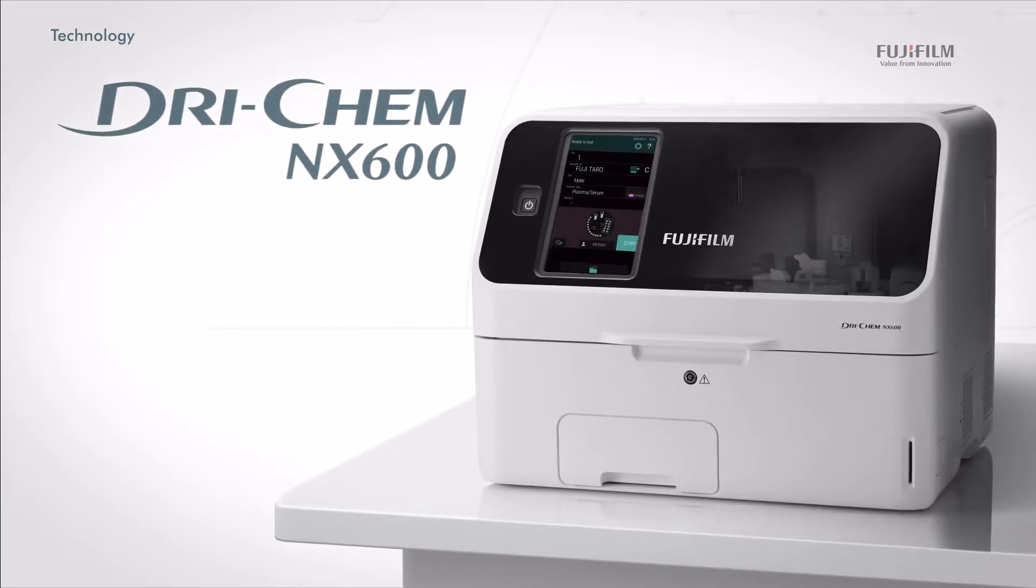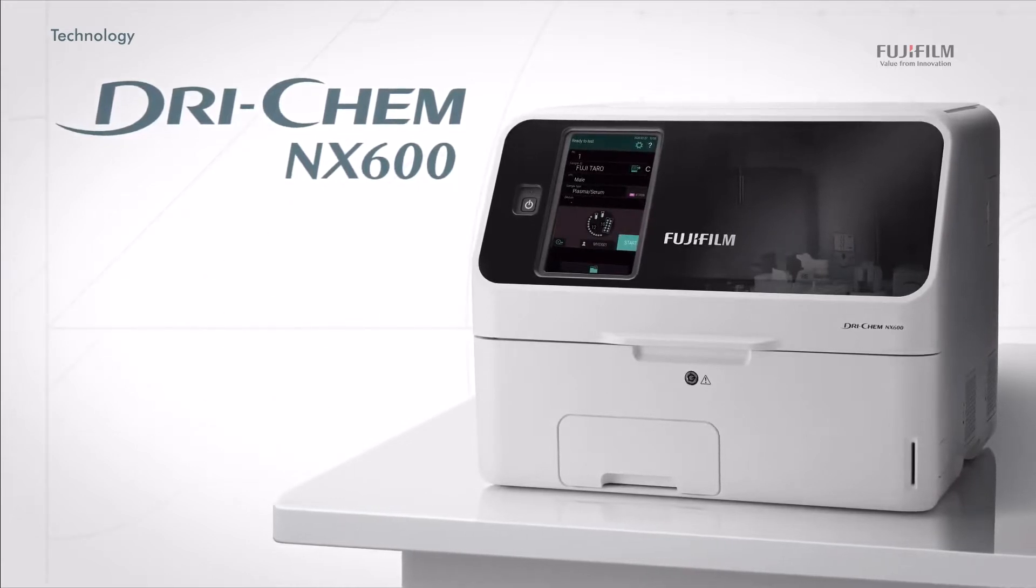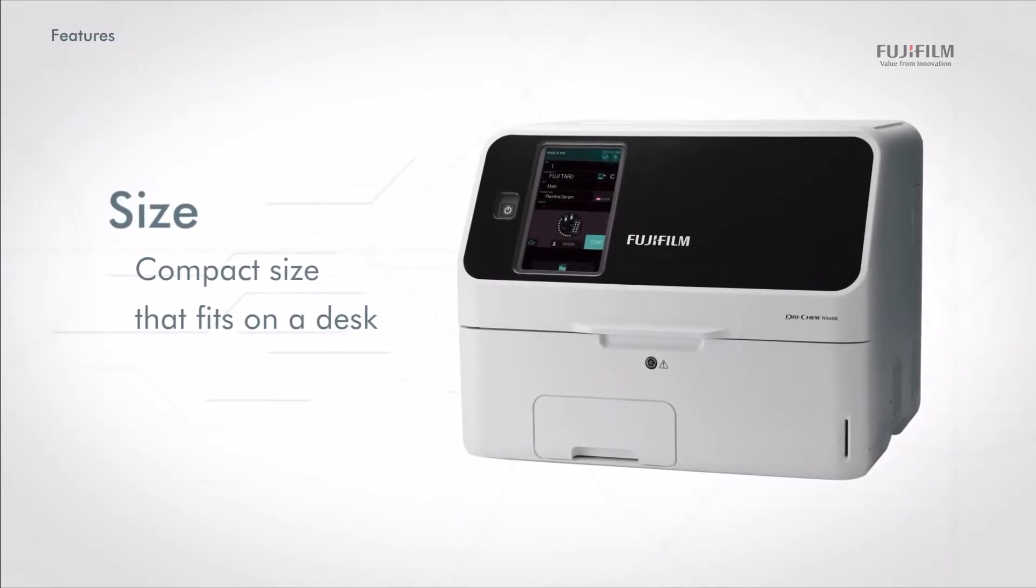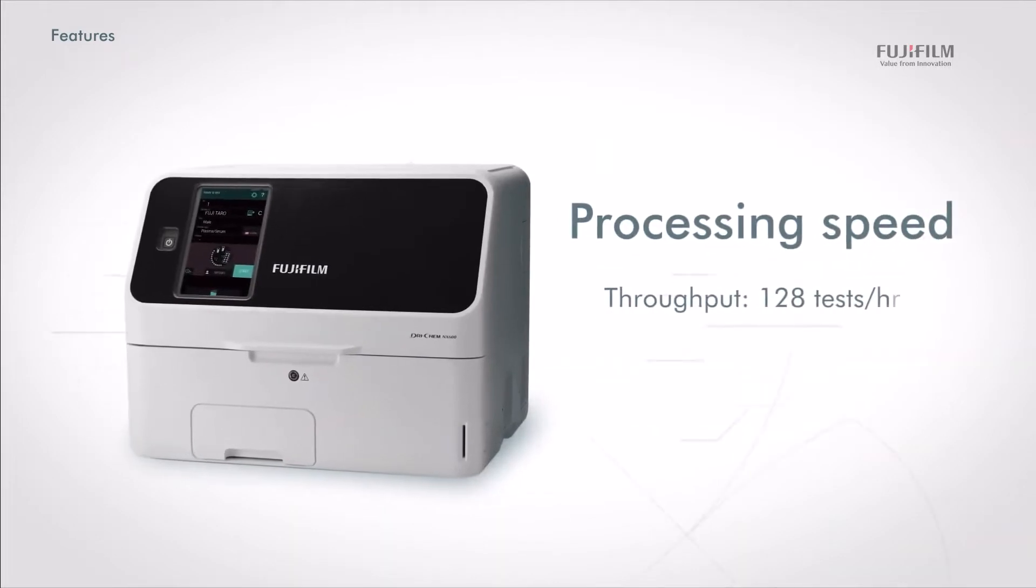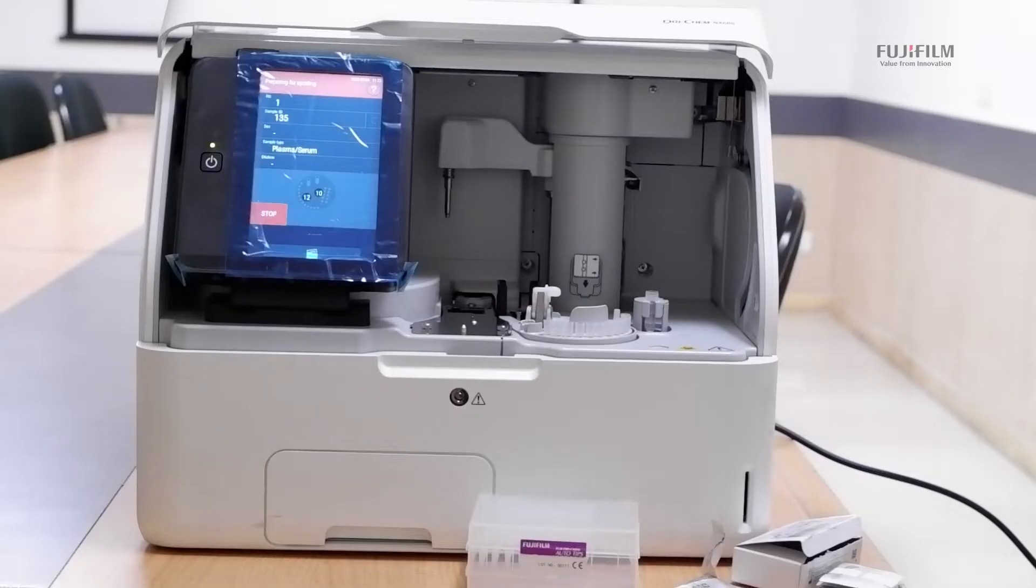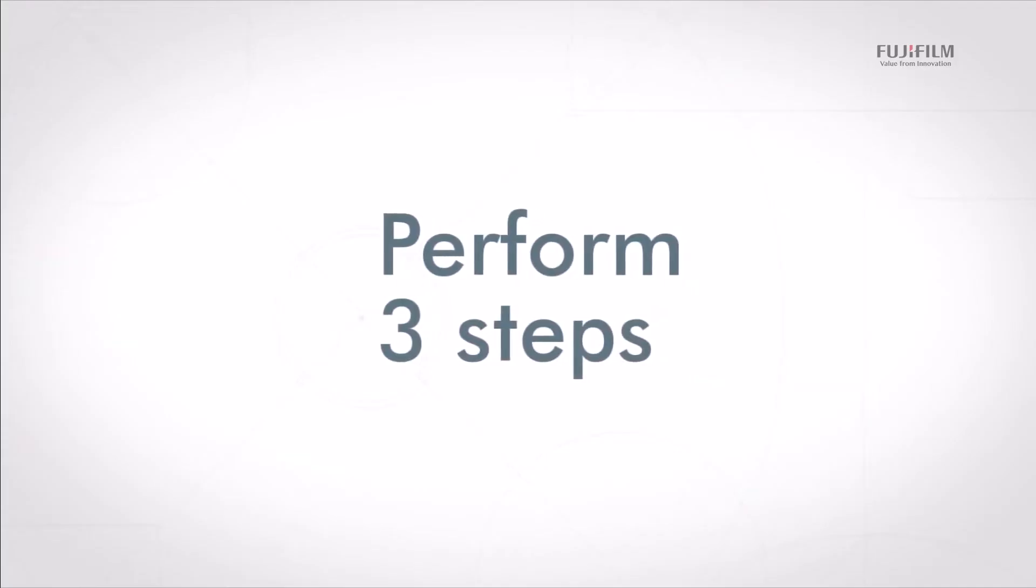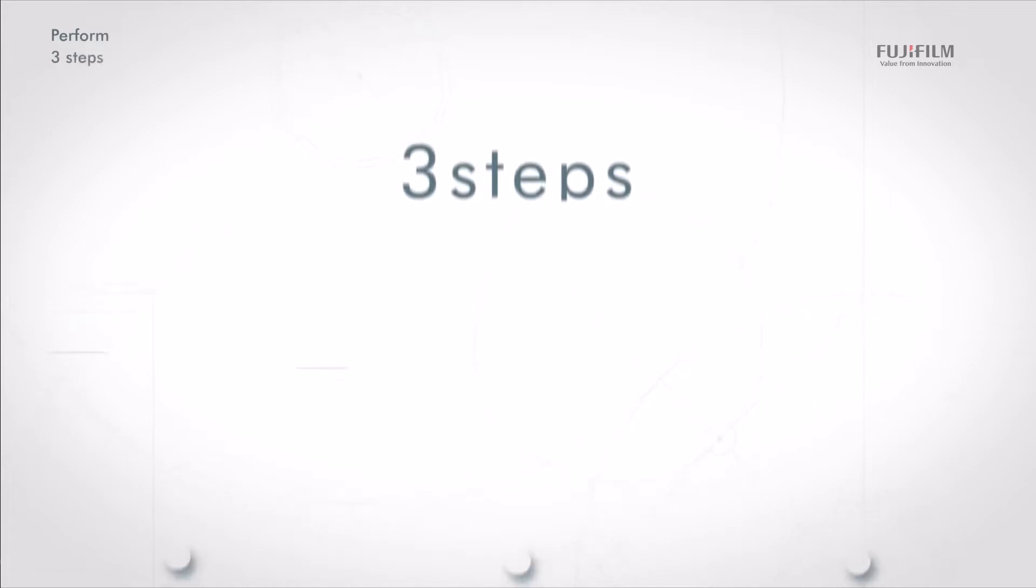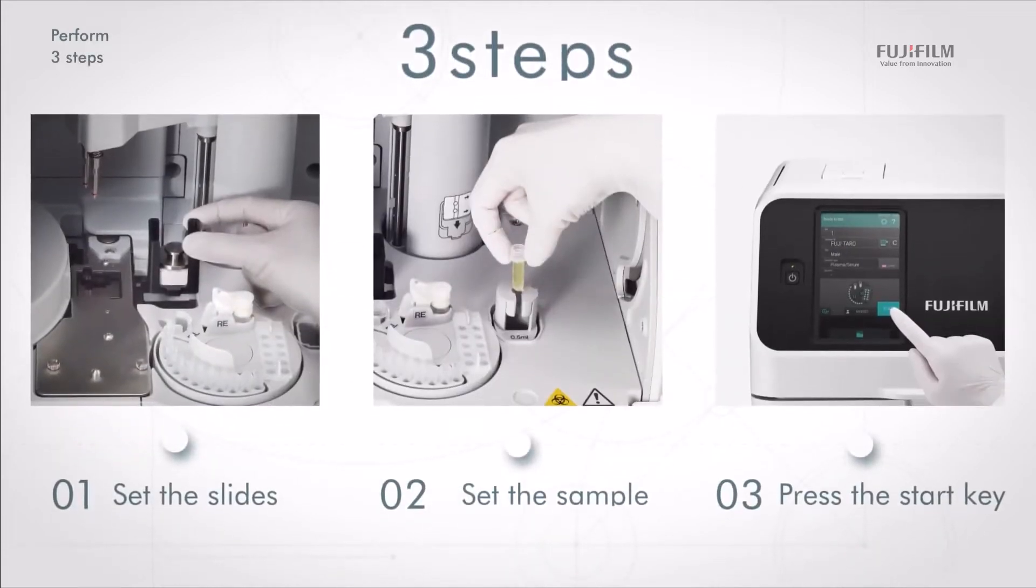FUJI NX600 is a dry chemistry analyzer which is a benchtop analyzer with a throughput of 128 tests per hour. It uses a fine chemical technology which is a patented technology by FUJI Film Japan. It uses a very simple 3 step procedure: set the slide, set the sample and press start.